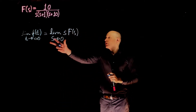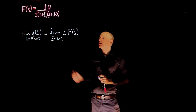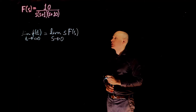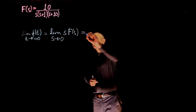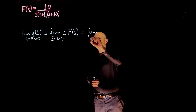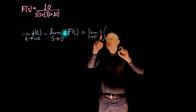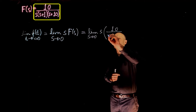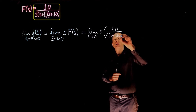Going with the Final Value Theorem is a lot simpler and faster than finding the inverse Laplace and then taking the limit of f(t) when t tends to infinity. This equals the limit as s tends to 0 of s times the function — that is, s times 10 over s(s+1)(s+10).